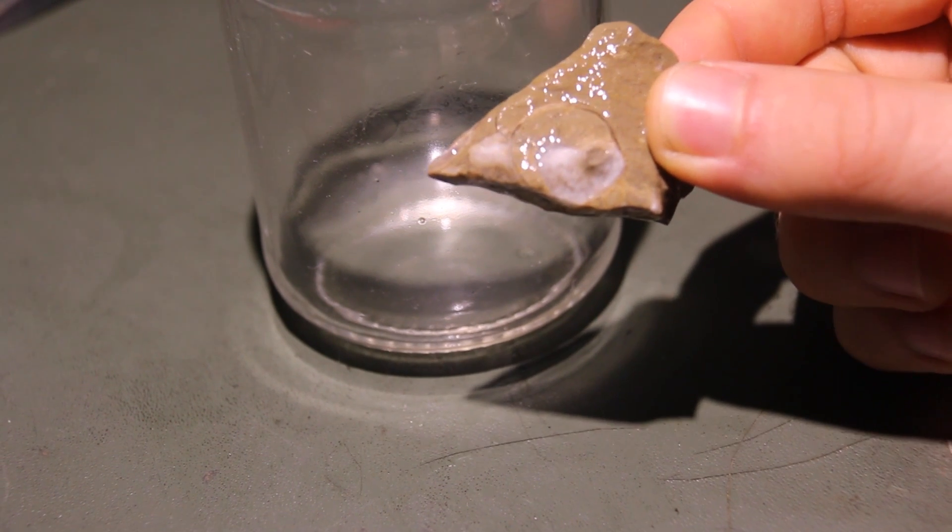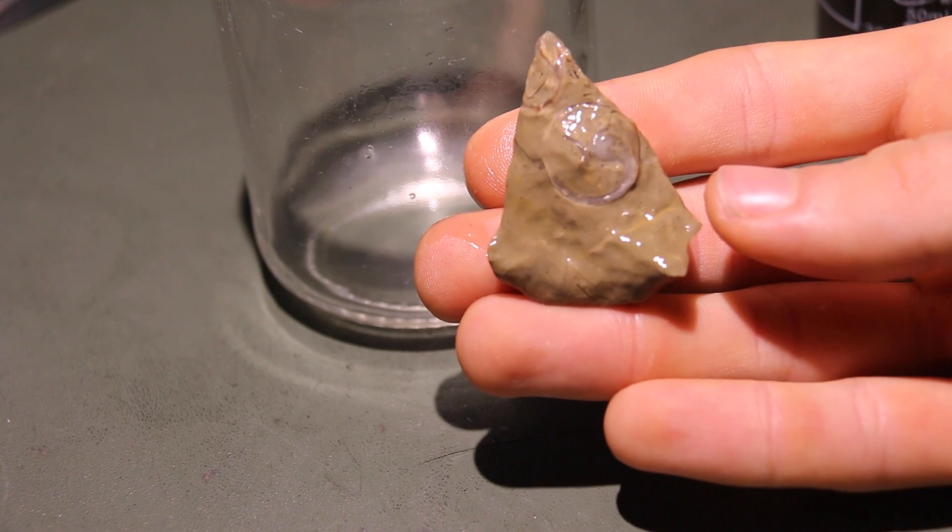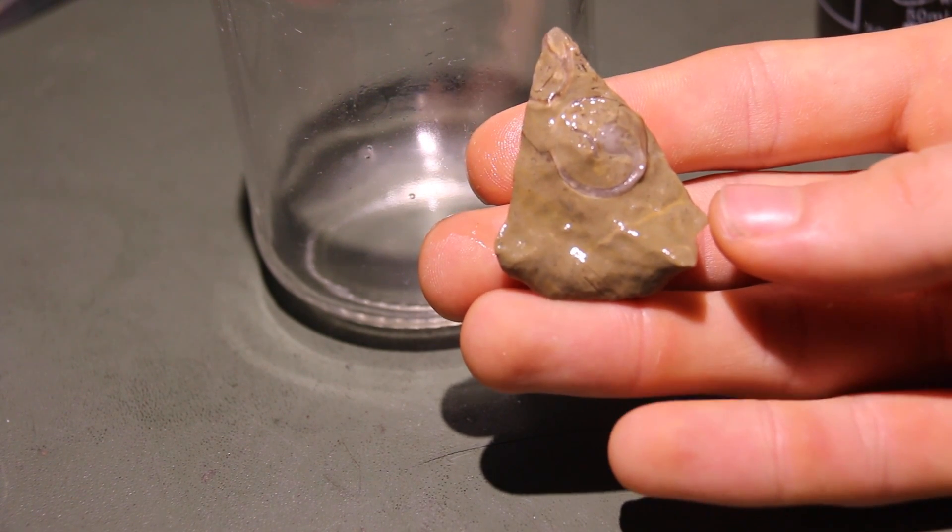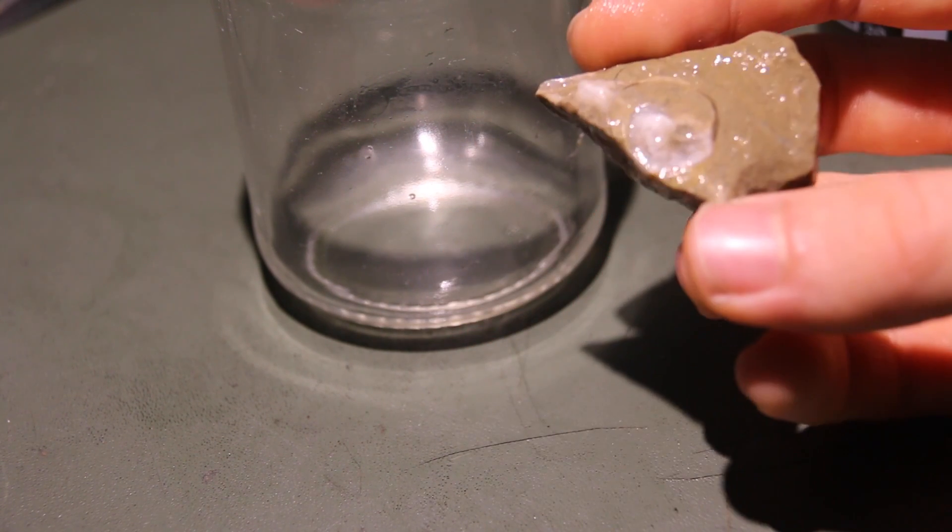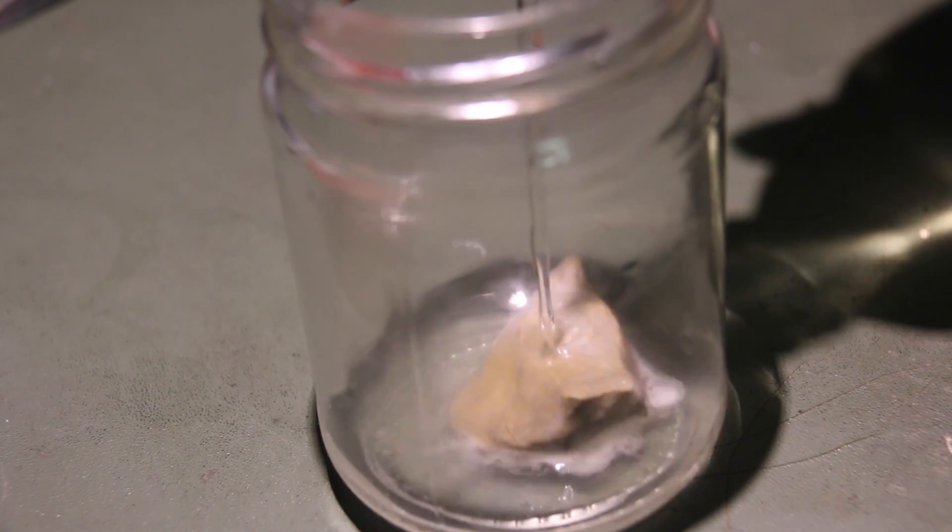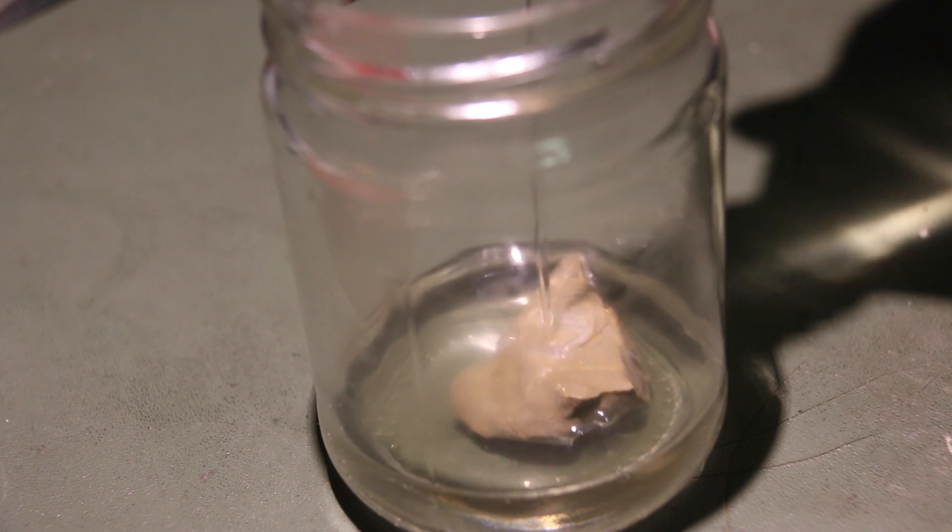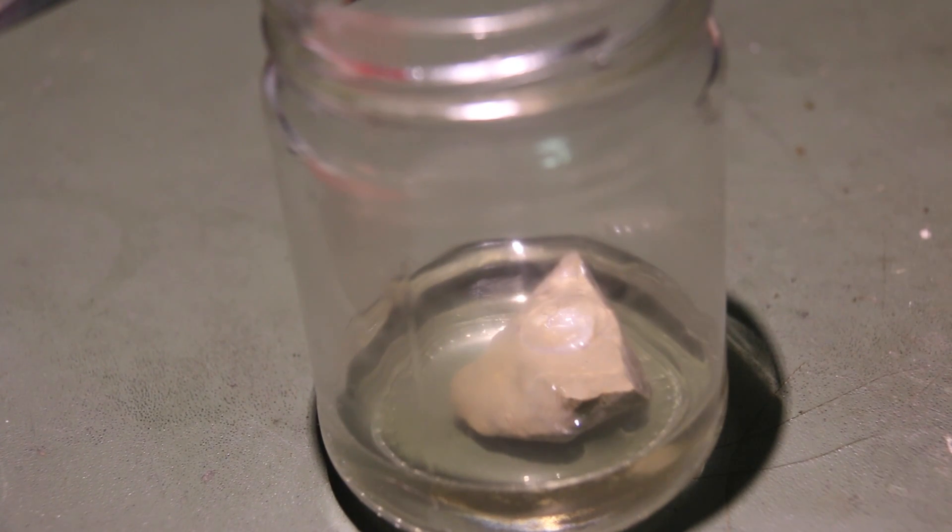As you can see, we've dissolved away quite a lot of this rock. We can see crystals in the rock that have filled the place of the fossil. This sulfuric acid is reacting with the carbonates in the stone, but it's reacting much more slowly than the hydrochloric acid did.